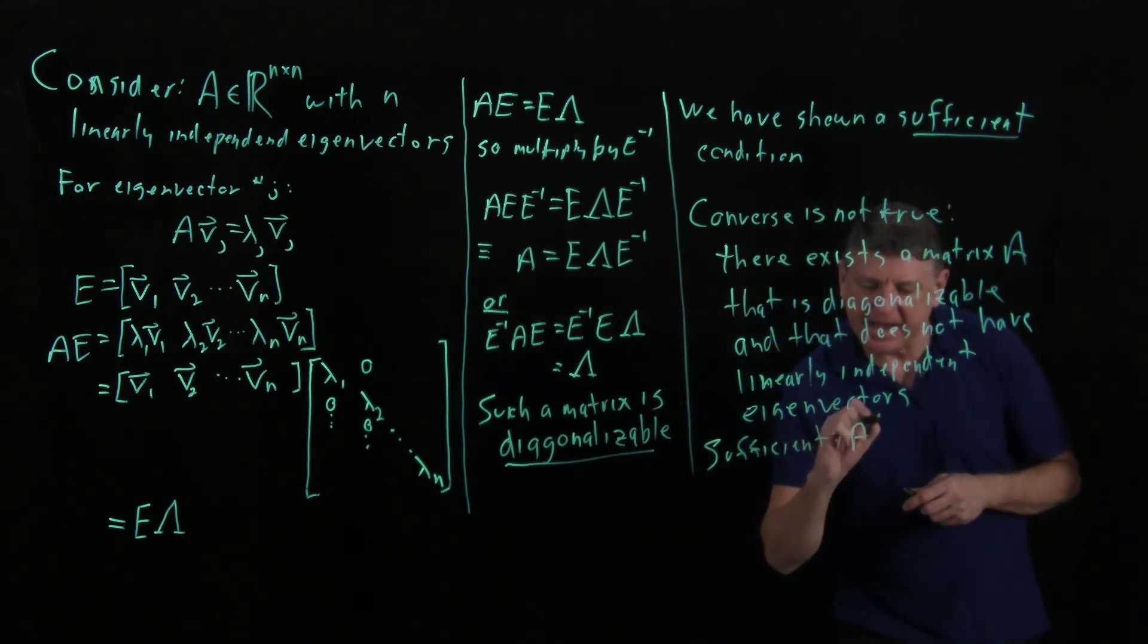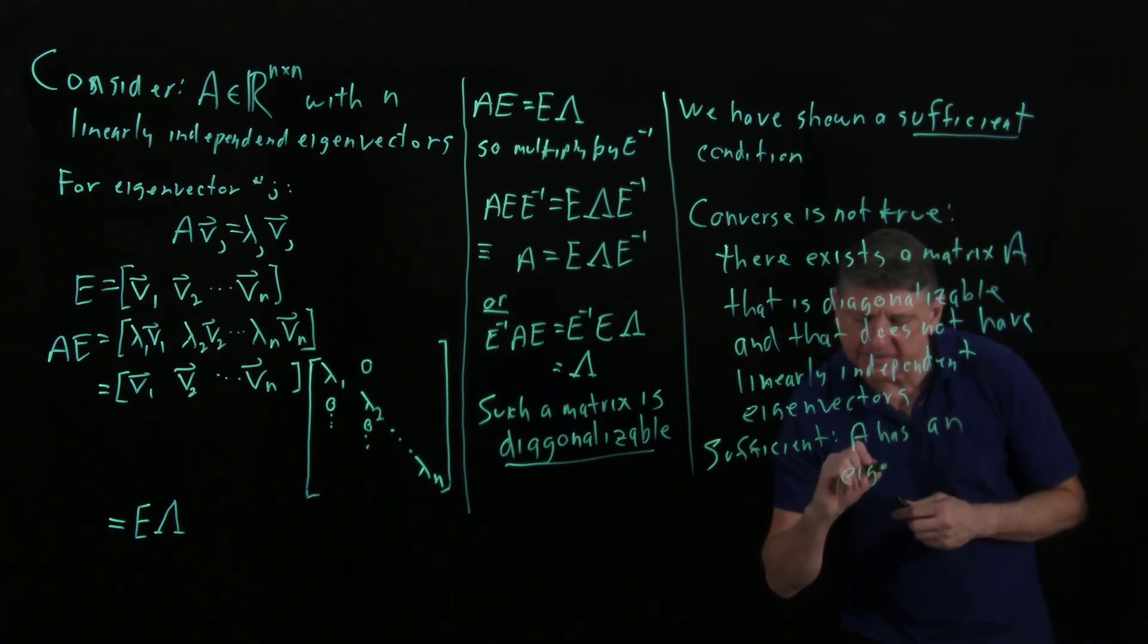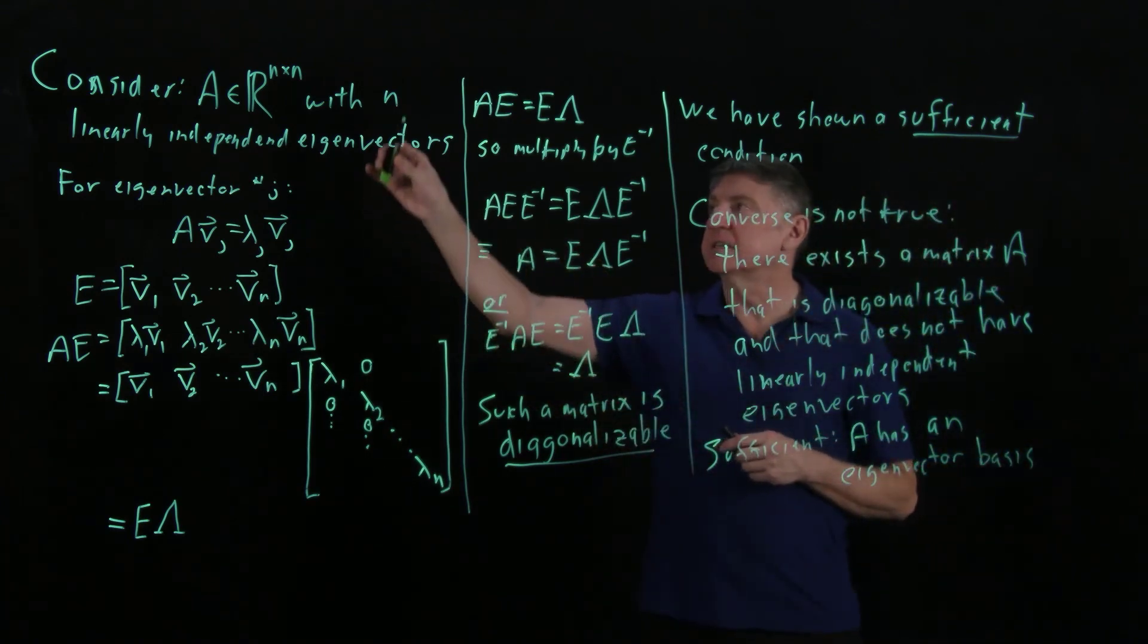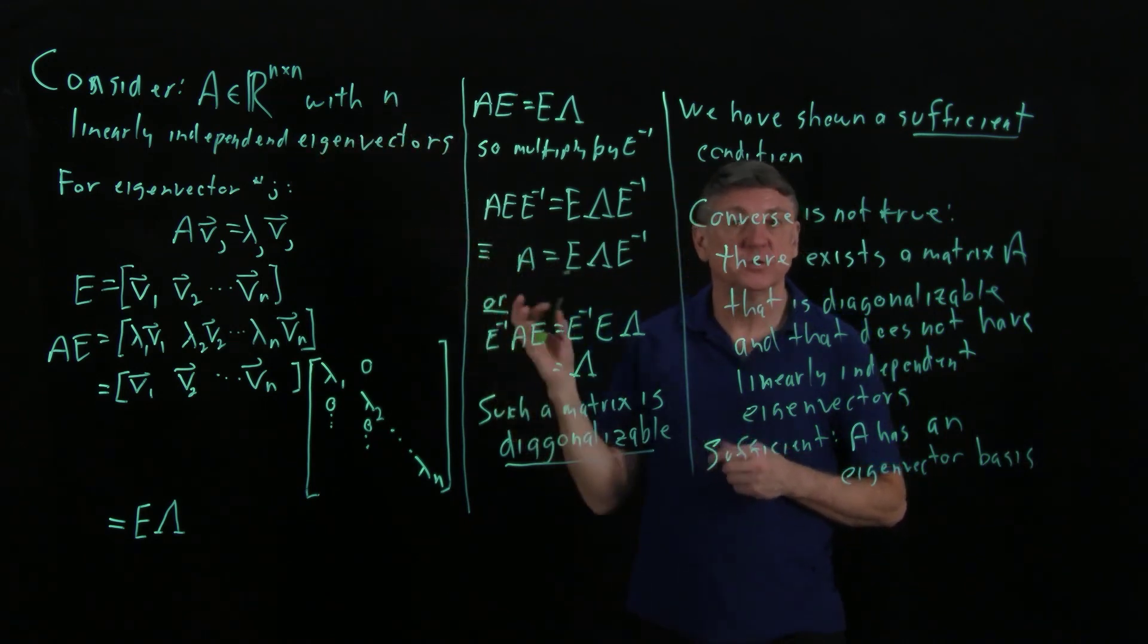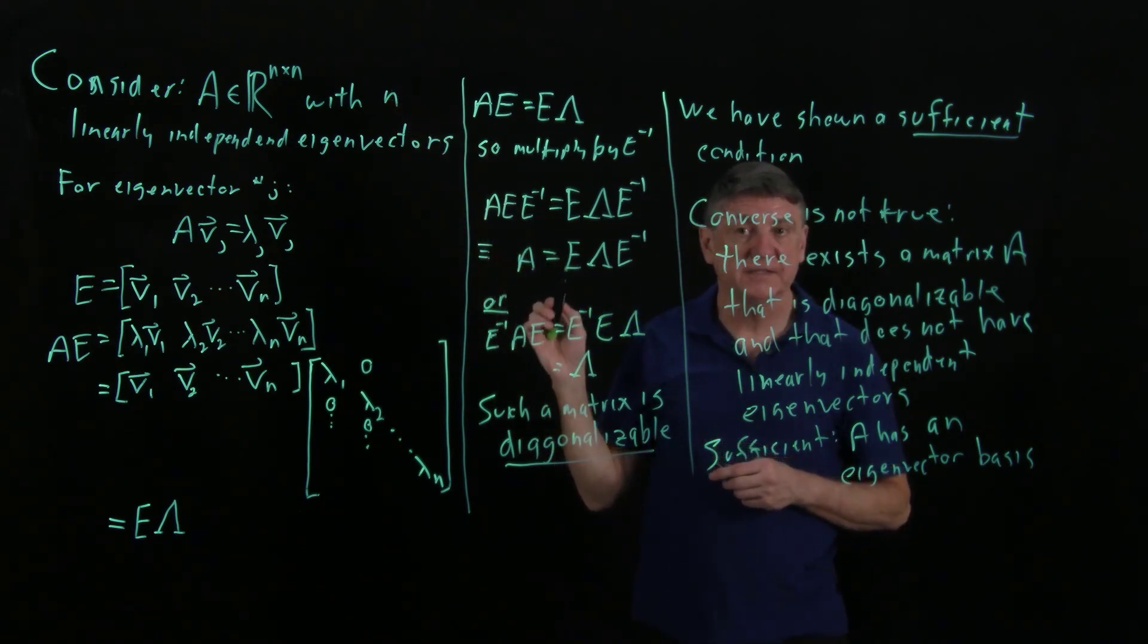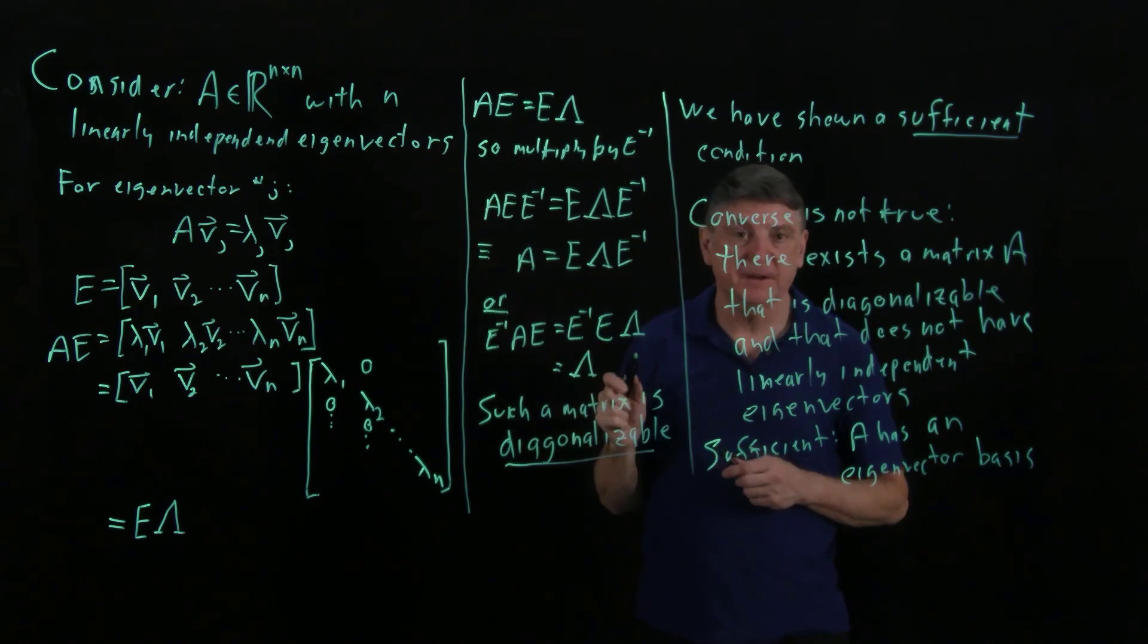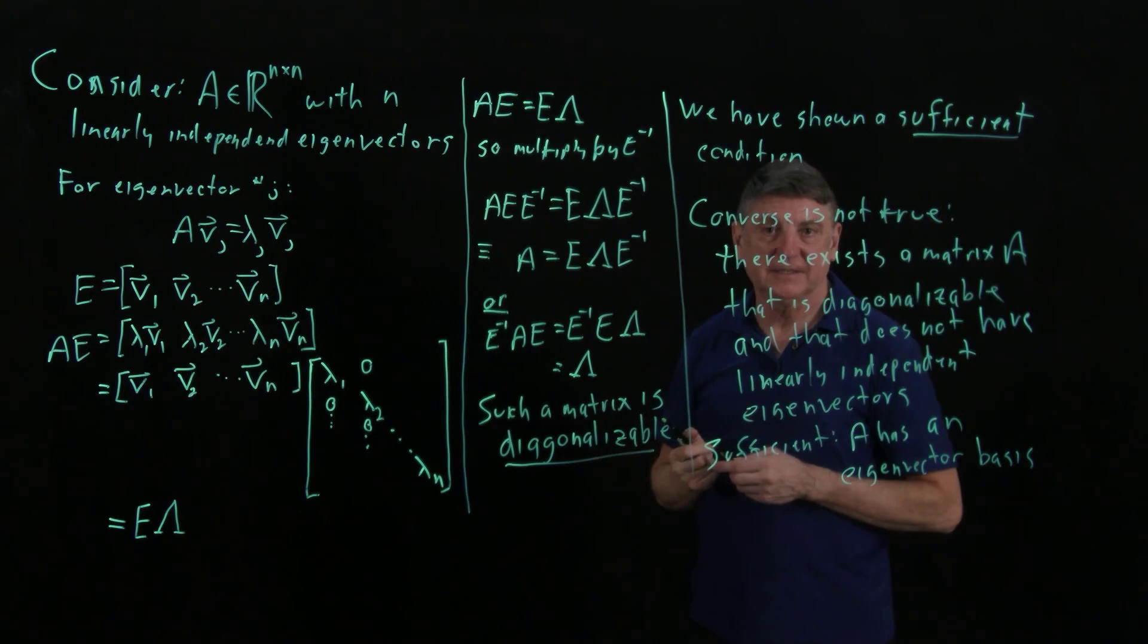...is that A has an eigenvector basis. That is, when we have a set of linearly independent vectors, those are a basis, and here we have n of them. So they are a basis for the column space of A. And when A has n linearly independent eigenvectors, what we'll often say is that matrix A has an eigenvector basis.